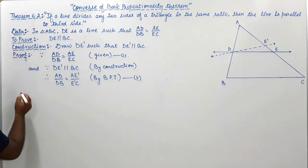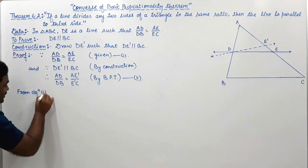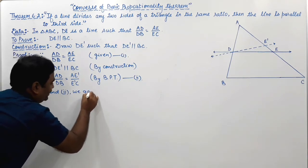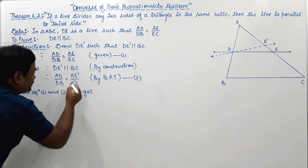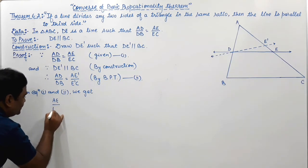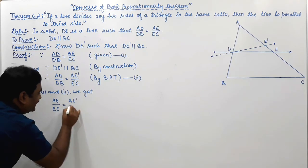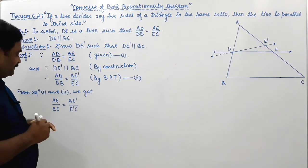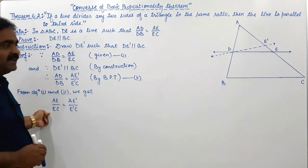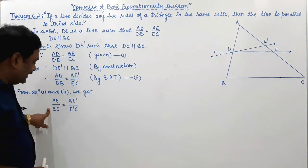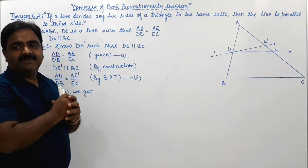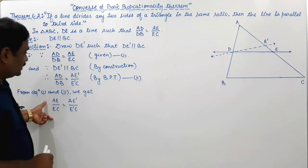So if the left side of both equations are equal, then the right side must also be equal. So from equations 1 and 2, we get: AE upon EC equals AE' upon E'C.